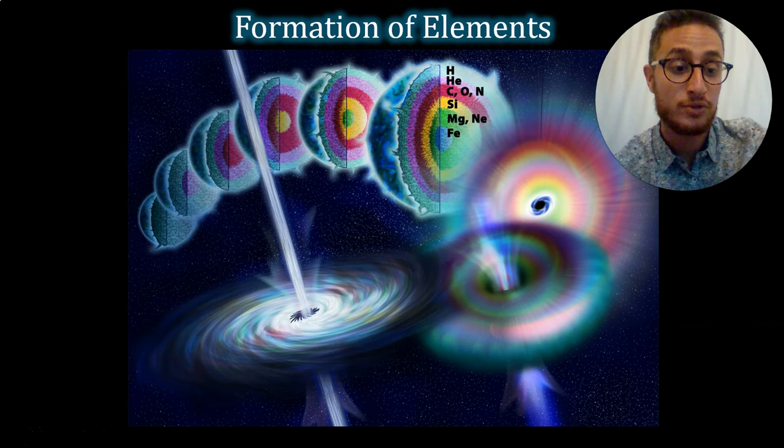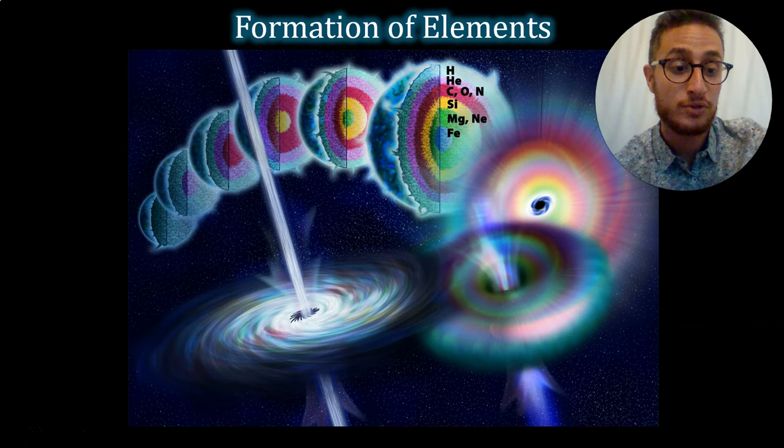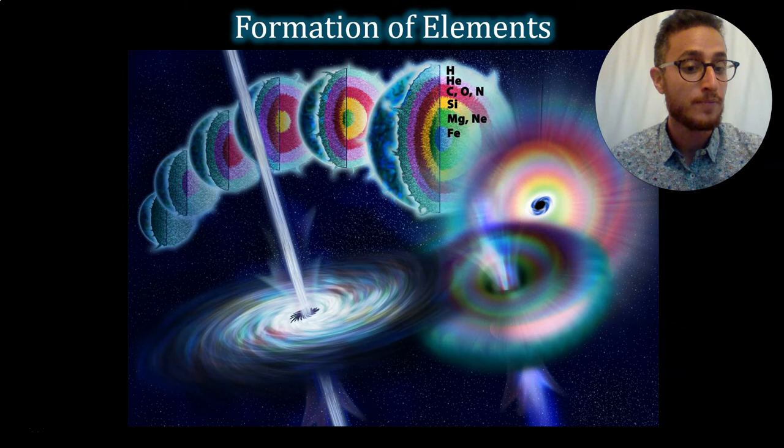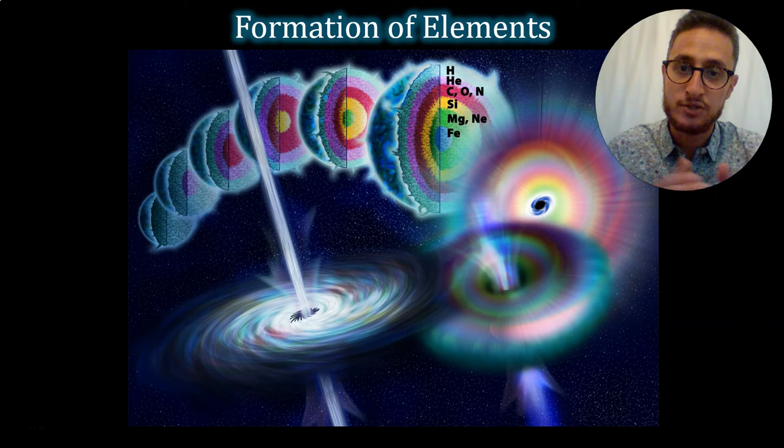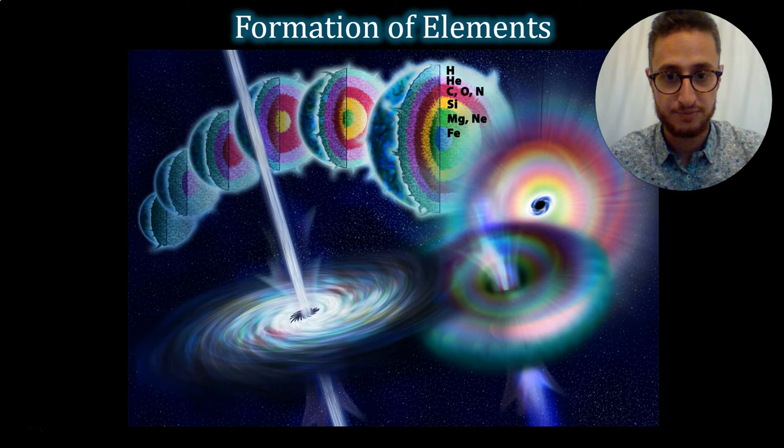And these things will separate out in layers by density because, of course, the heavier elements will sink and the lighter elements will float. And so the larger the star, the more elements are being fused in its core. We believe that this is where all of the elements on the periodic table come from. This is where every element comes from that makes up your body. They were forged in the core of stars. And we can still see this going on even today.